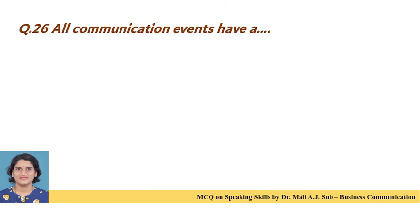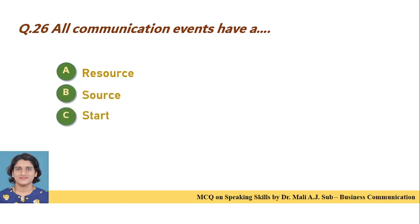Question 26: All communication events have a — Option A: resource. Option B: source. Option C: start. Option D: end. Correct answer is Option B — all communication events have a source.